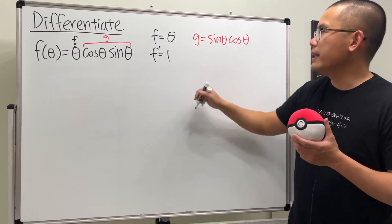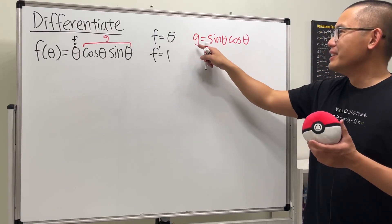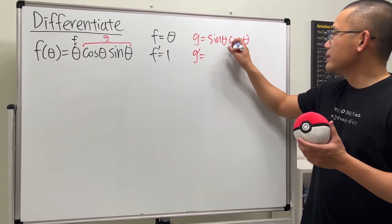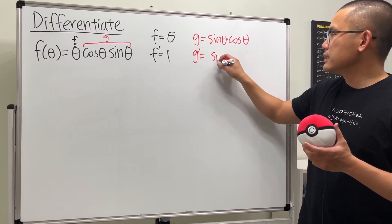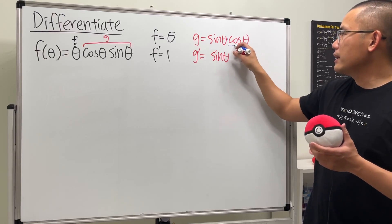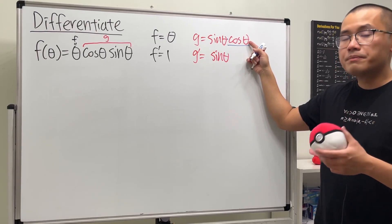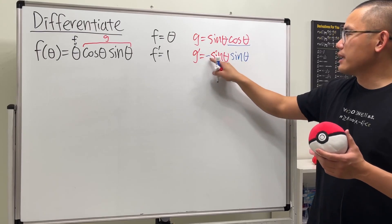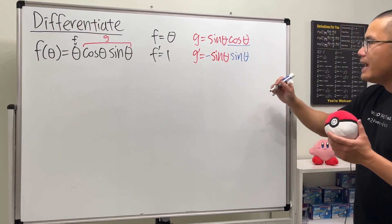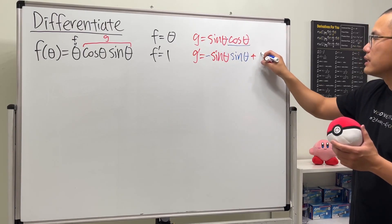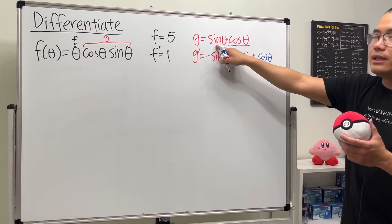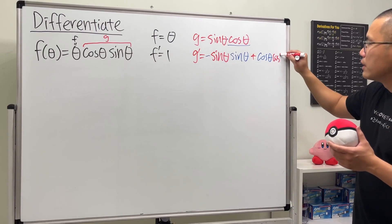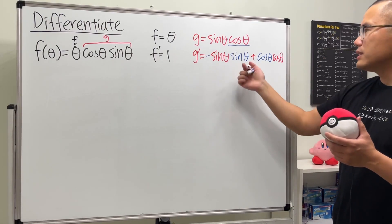The derivative of theta is just equal to one. To differentiate g we have to use the product rule. Keep the first function sine theta, then differentiate the second: the derivative of cosine theta is negative sine theta. Then add cosine theta times the derivative of sine theta, which is cosine theta.